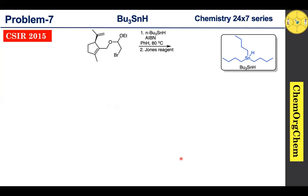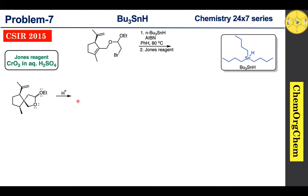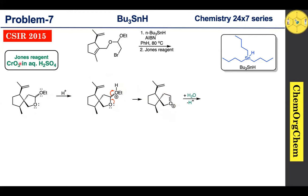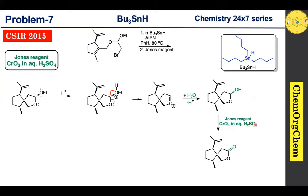Moving on to the second reaction condition: the use of Jones reagent. Jones reagent is chromium trioxide in aqueous sulfuric acid — it is an acidic mixture. In the presence of acid, protonation of the intermediate quickly takes place to give the protonated intermediate. One of the lone pairs on oxygen then facilitates the loss of ethanol as a byproduct, producing a new intermediate. This intermediate quickly reacts with water present in the aqueous sulfuric acid, producing the corresponding lactol intermediate. The lactol intermediate is then oxidized under Jones reagent conditions to give the corresponding lactone product.